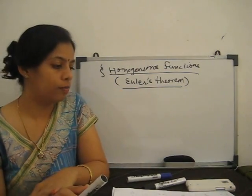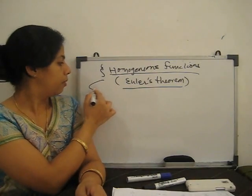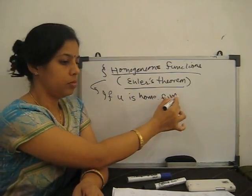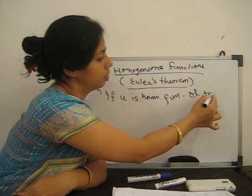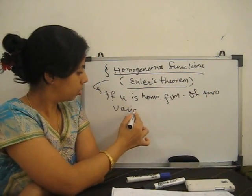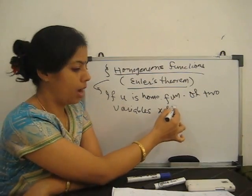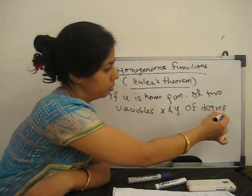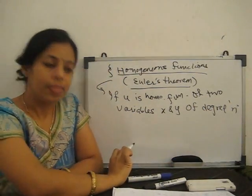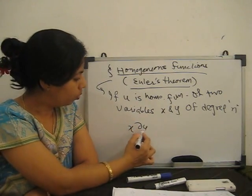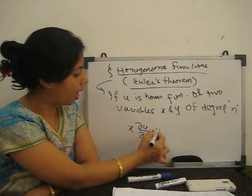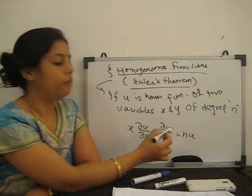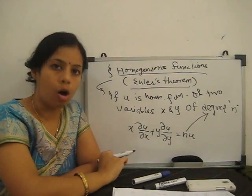Now, what is Euler's theorem for homogeneous functions? It states that if U is a homogeneous function of two variables x and y of degree n, then x·(∂u/∂x) + y·(∂u/∂y) = n·u, where n is the degree of the given function u.